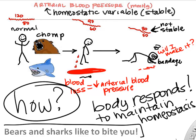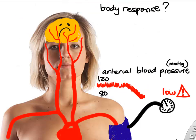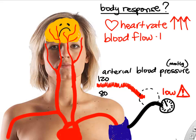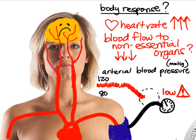How does the body respond? If your blood pressure is too low, you're not going to get blood flow to your brain or heart muscle, which will cause death. So the body's response is to increase heart rate and pump blood more vigorously to help increase blood pressure. You'll also decrease blood flow to non-essential organs like the intestines, muscles, or skin, redirecting it to essential organs like the brain and heart.